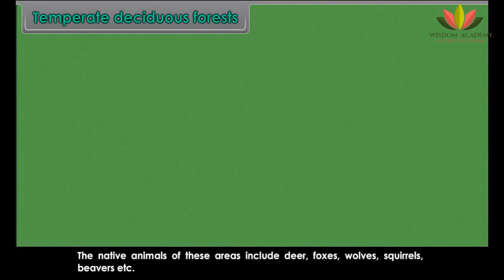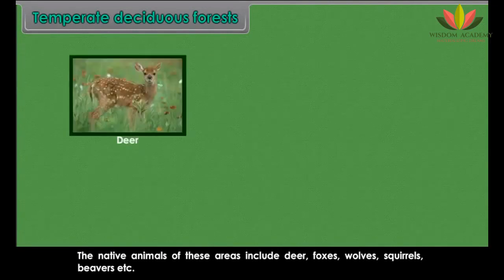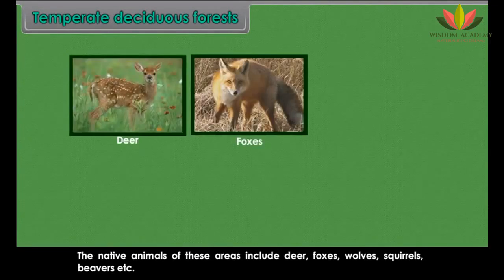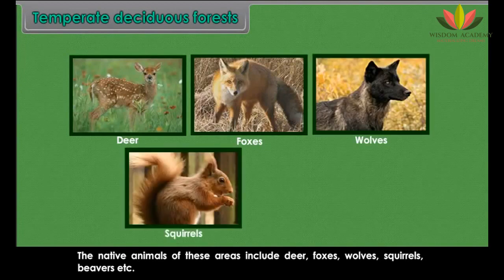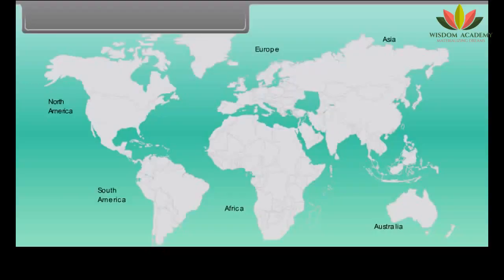The native animals of temperate deciduous forest areas include deer, foxes, wolves, squirrels and beavers.